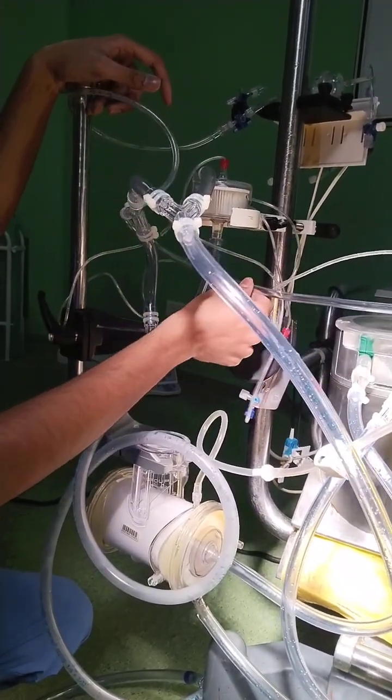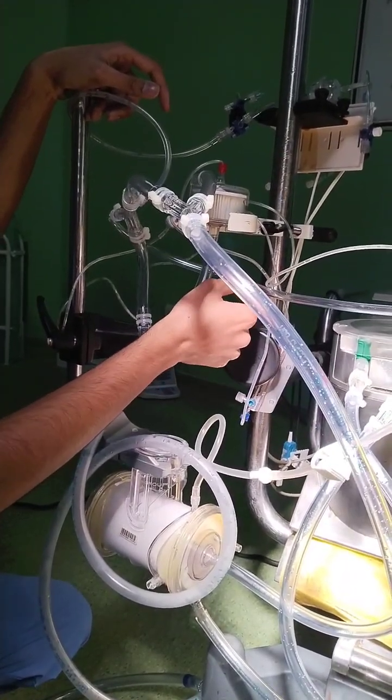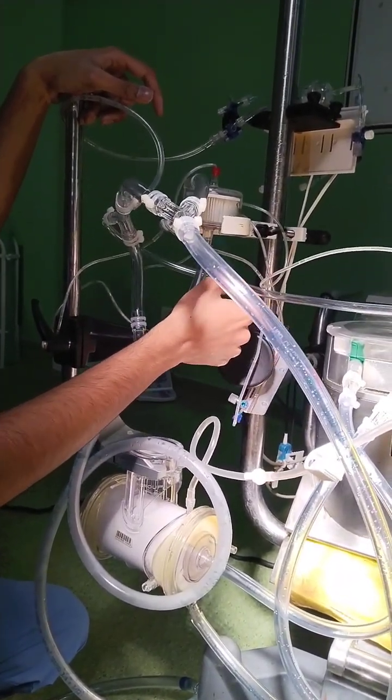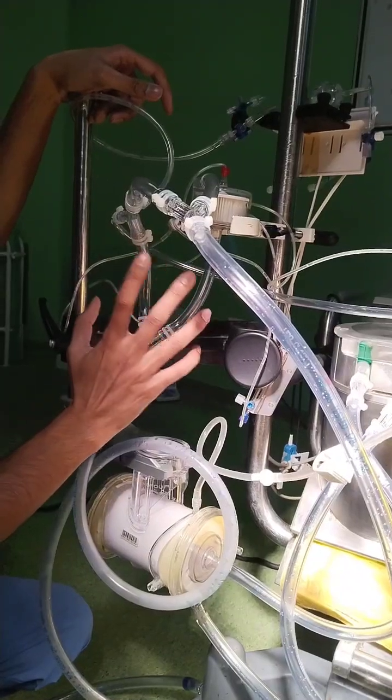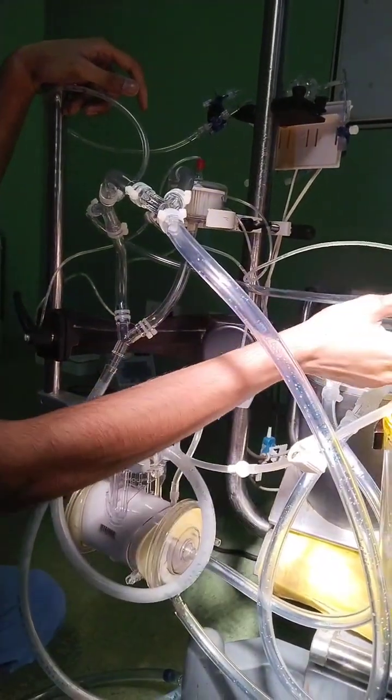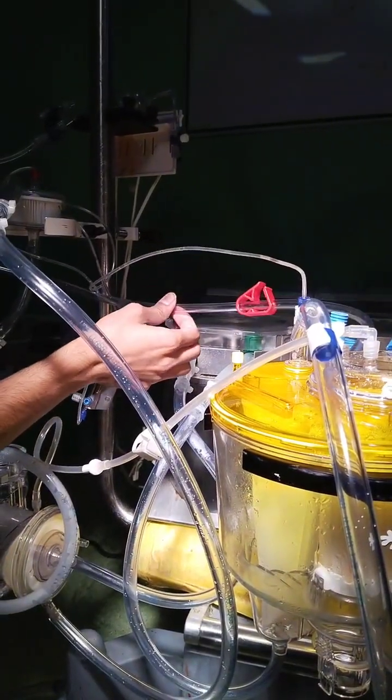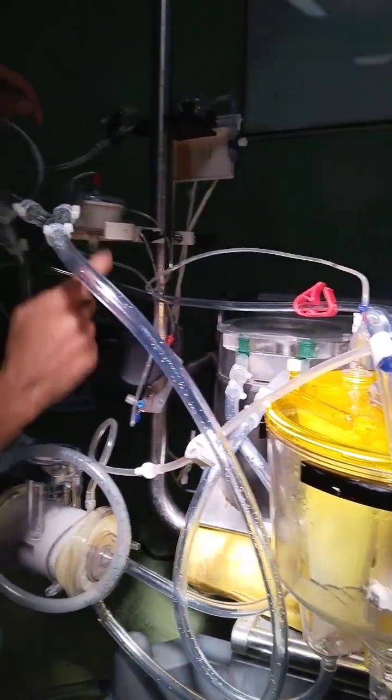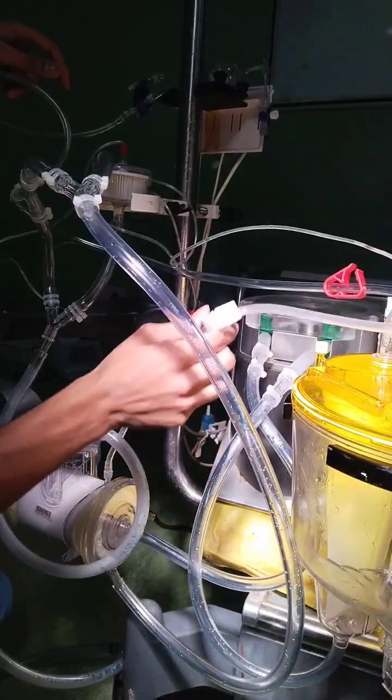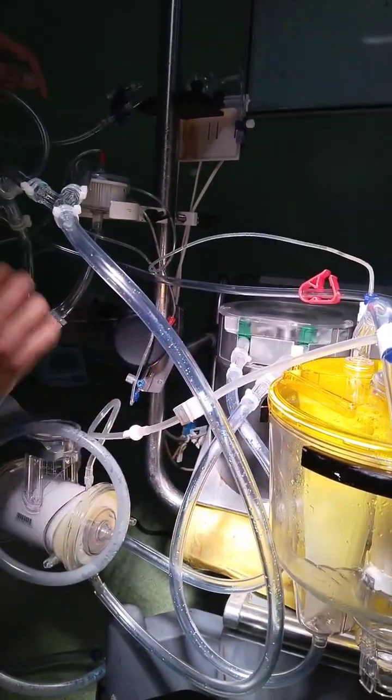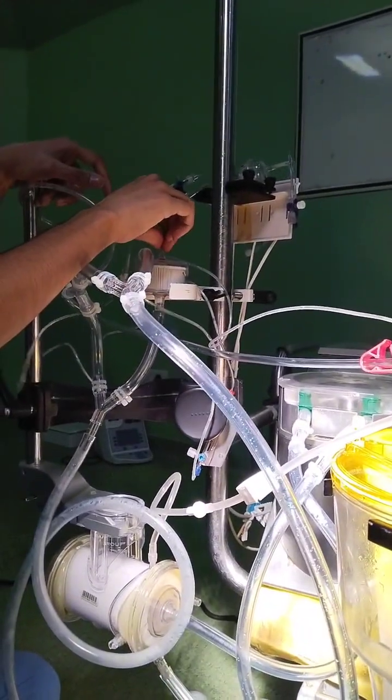This bypass line is used for removing any air or in case of arterial filter failure or change out. You will see there needs to be a clamp here in the recirculation line. This is the recirculation line of the arterial filter, and this is the recirculation line of the oxygenator. Then you connect the manifold here on top of the arterial filter.